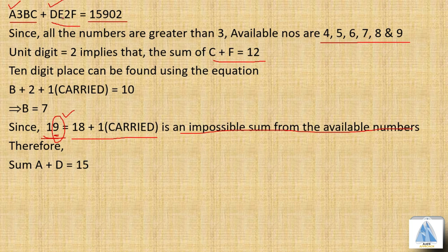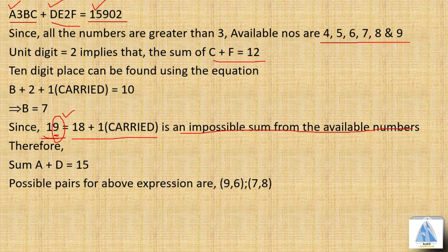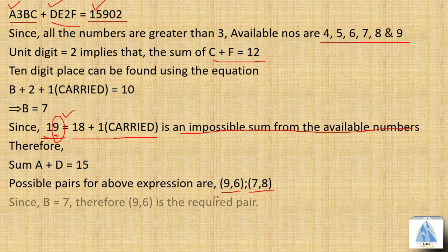A + D must equal 15. There is no carried 1, therefore the possible pairs for 15 are (9, 6) and (7, 8). Now, since B equals 7 and all numbers are different, the pair (7, 8) is not possible. Therefore, (9, 6) is the required pair for our answer.